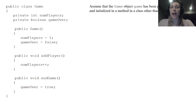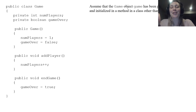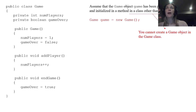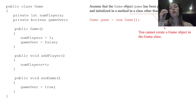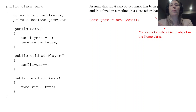We're going to use this class and assume the Game object — capital G — with lowercase g as the reference has been properly declared and initialized in a class other than Game. That's often what the directions say on the AP CS exam: 'in a class other than Game.' Remember, you cannot create a Game object inside the Game class itself.